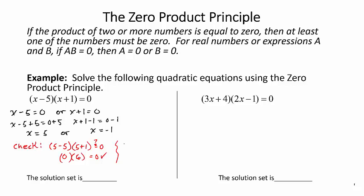And the other solution of negative 1, if I stick negative 1 into our original equation, negative 1 minus 5 times negative 1 plus 1. Well we know with that second factor, the first factor is negative 6, and the second one is zero, right? Does negative 6 times zero equal zero? Sure thing. So the solution set is negative 1 and 5.